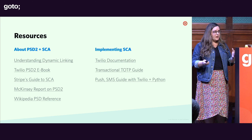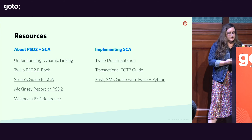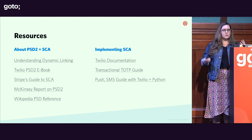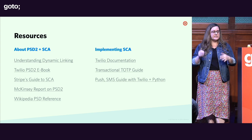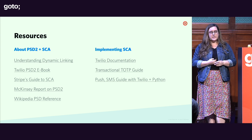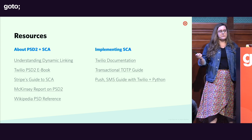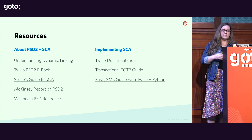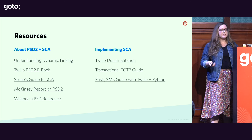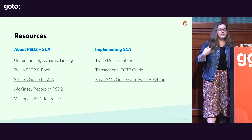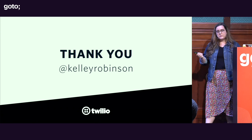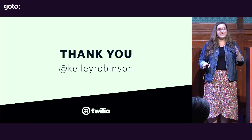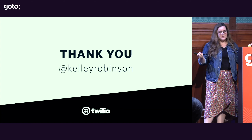If you have more questions, there are resources I can recommend — more details about dynamic linking, and Twilio links for implementation. I'll post these slides after, so all links will be available. Even just reading the Wikipedia article and following those links is really informative and will help you make more informed decisions about what's relevant for your business when implementing SCA. Hopefully I've given you a better understanding of what you might need to think about in the next six months before this goes into effect.